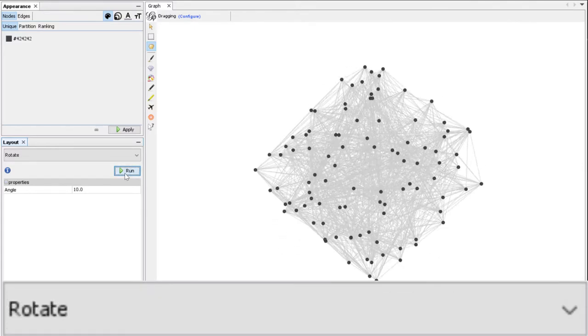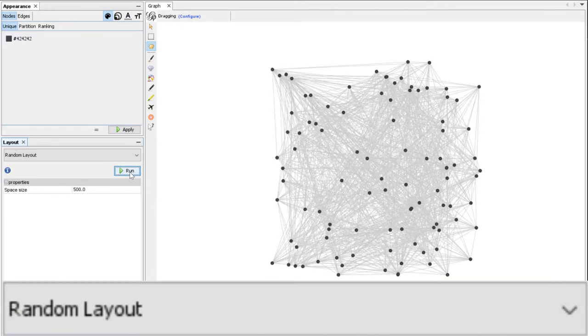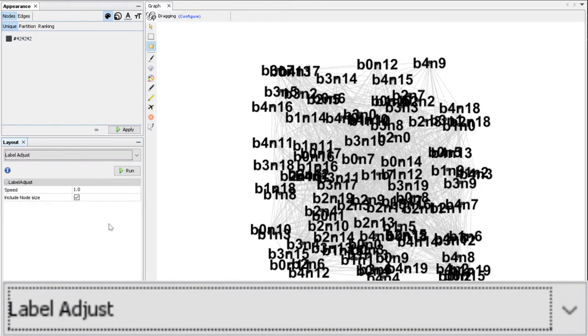Rotate rotates your network. Random layout randomizes the network. And label adjust prevents labels from overlapping.